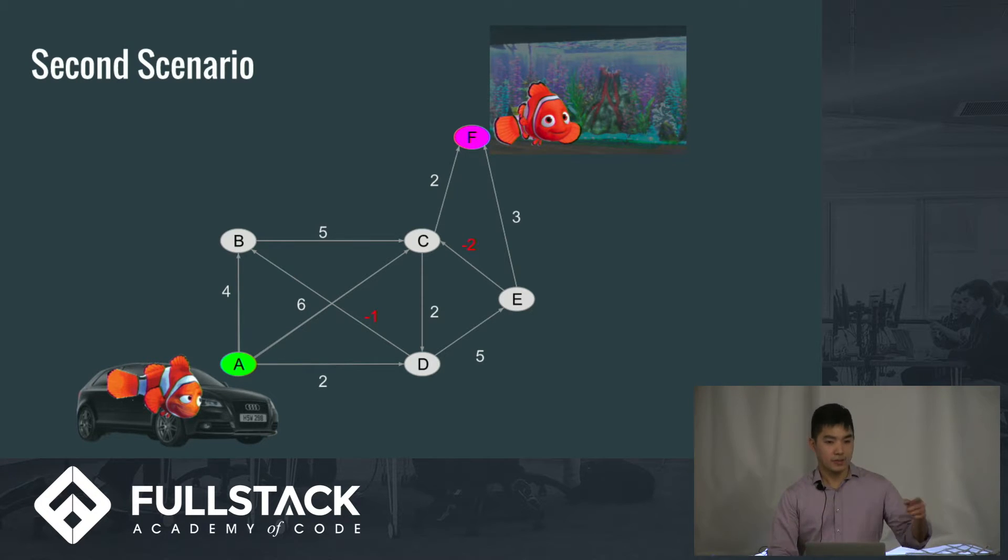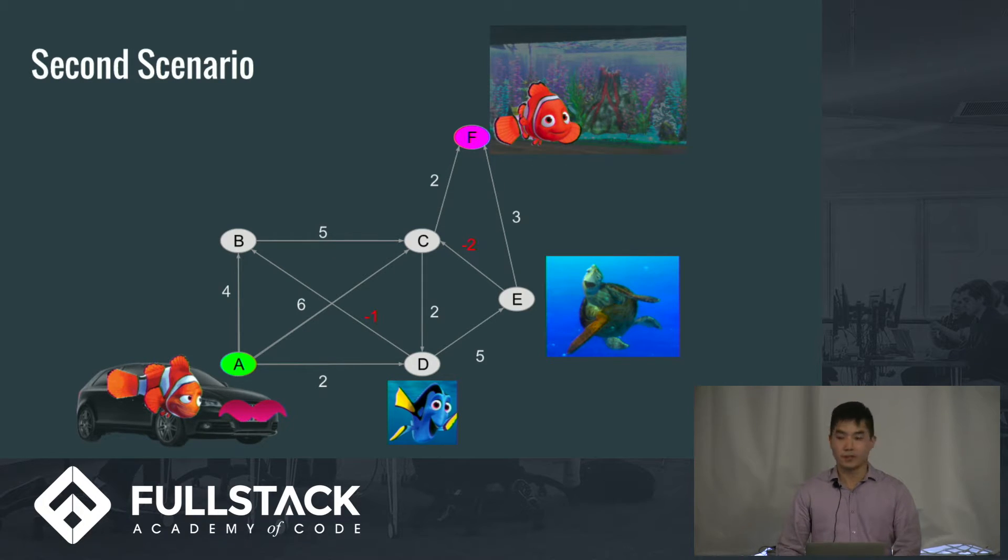So from A to B, it's going to cost Nemo's dad $4. You could think of that as paying for gas, or going to 7-Eleven to make a pit stop, whatever. You'll notice that there's also negative numbers on there. What does that mean? So let's say Nemo's dad, like times are tough. He wants to moonlight as a Lyft driver. So at D, he can actually pick up Dory and take her to B. And you'll notice there's an arrow too pointing where you have to go. So at D, he can pick up Dory and go to B, and Dory's going to pay him $1 to do so. Same thing at E. He can pick up this turtle and go to C. So that's the setup for this diagram.